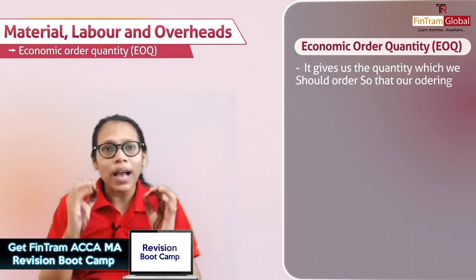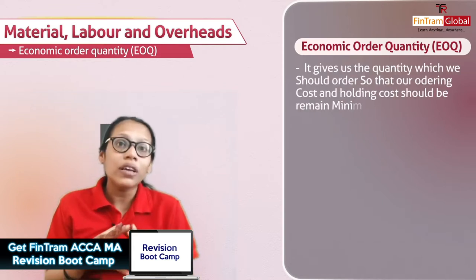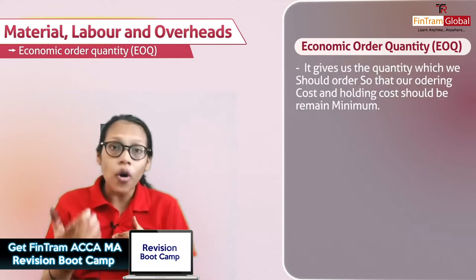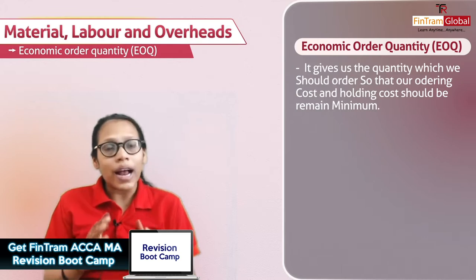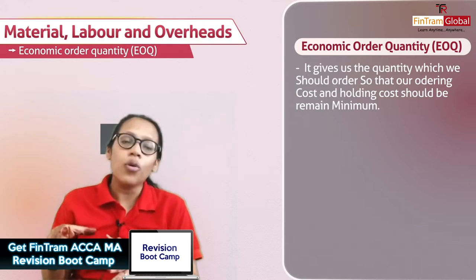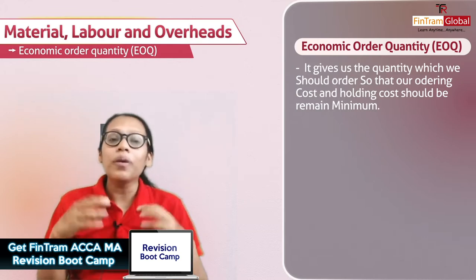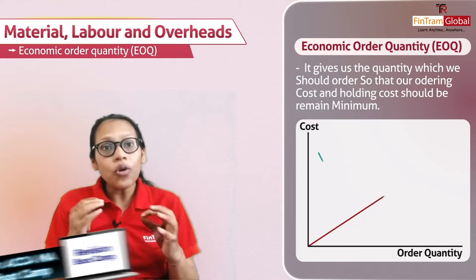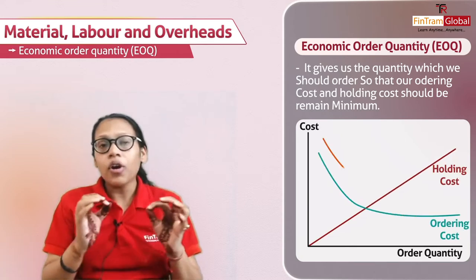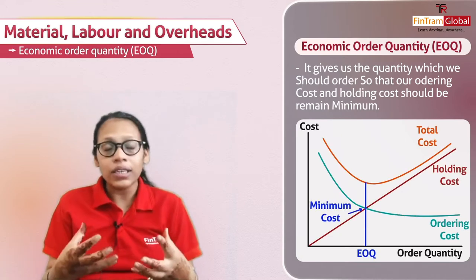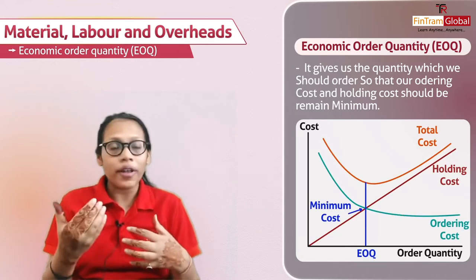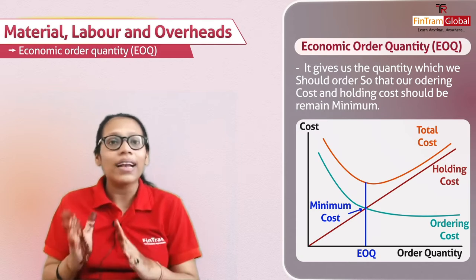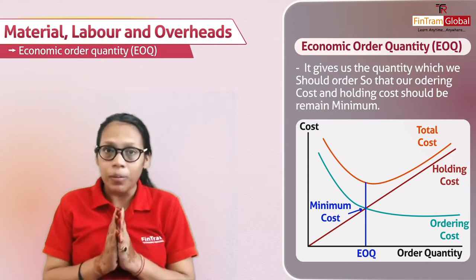This particular formula — this magical formula — gives us the quantity which we should order so that our ordering cost and our holding cost should be minimum. So EOQ, Economic Order Quantity, is an order size when both the holding cost and the ordering cost will be minimum.